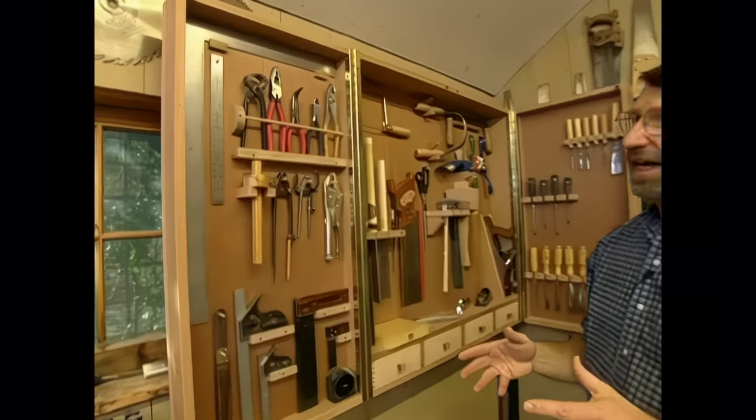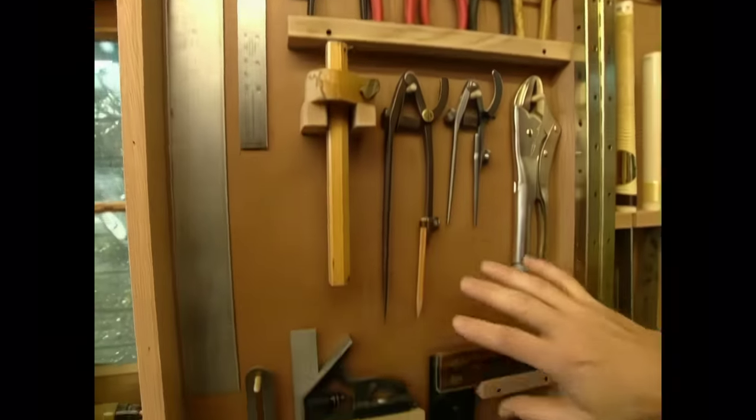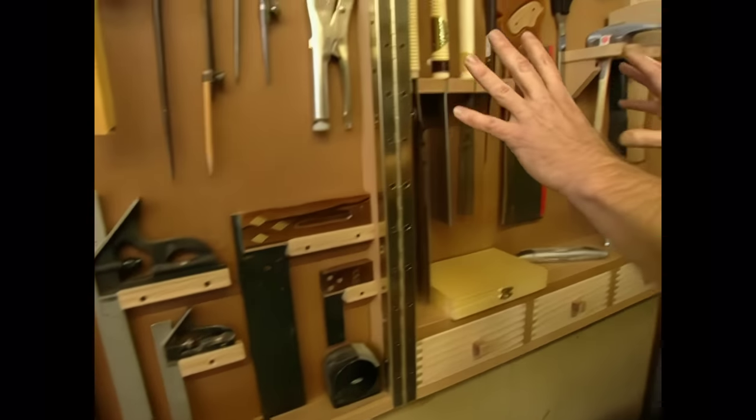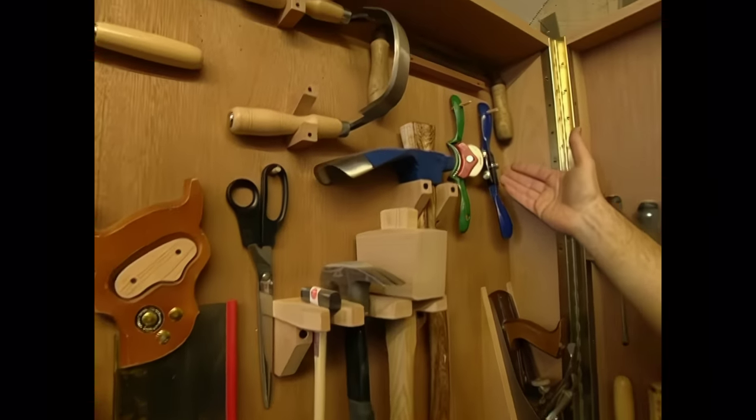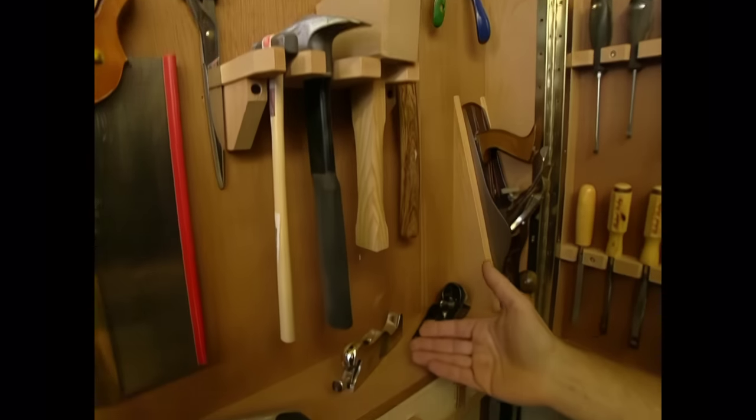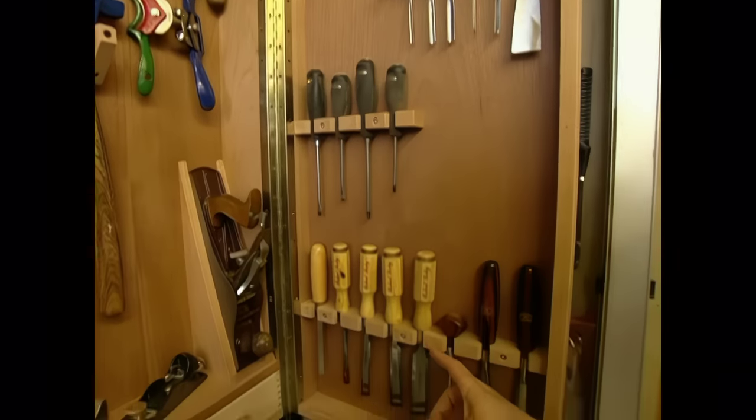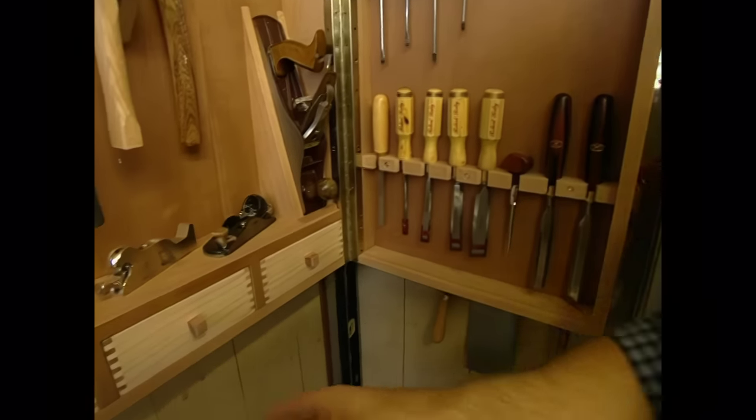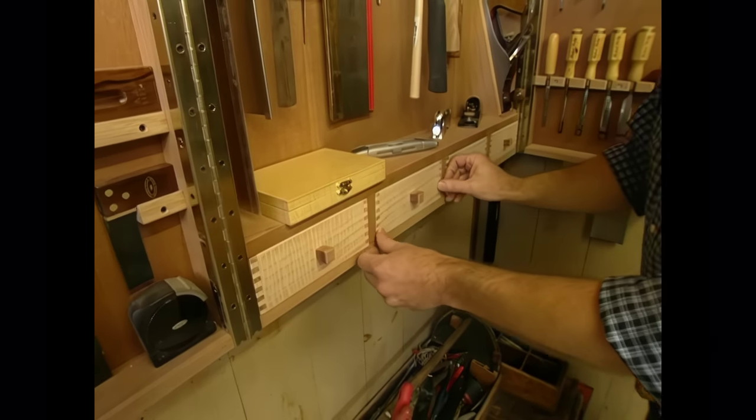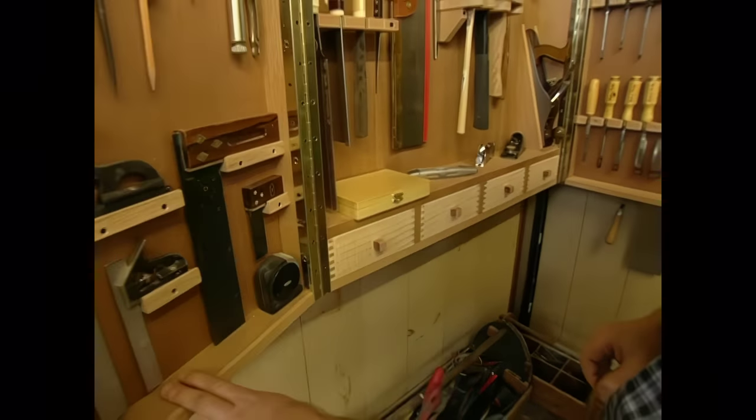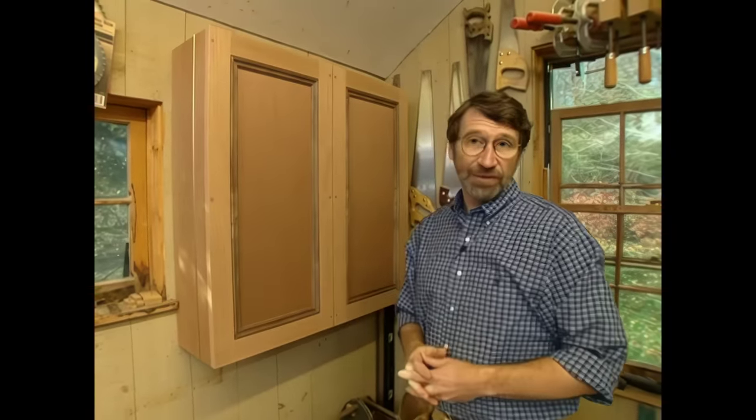Everything is organized by category. Here are the gripping tools. Then I have measuring and marking tools in this area. Here I have saws and then striking tools, shaping tools, and of course you always have some planes. On this panel I have carving tools, screwdrivers, and chisels. I also incorporated a few small storage drawers for miscellaneous items.